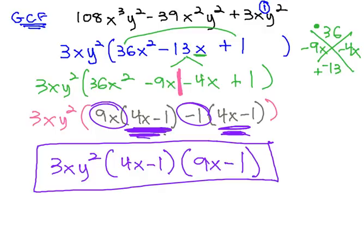If we wanted to, we could check this answer by multiplying out the binomials, and then distributing the 3xy² through that answer, and we would end up with 108x³y² minus 39x²y² plus 3xy².